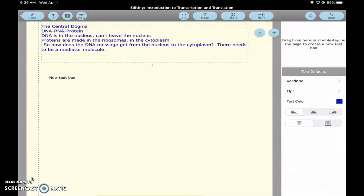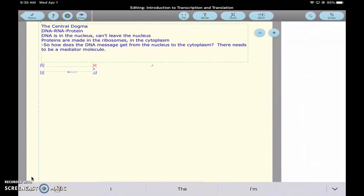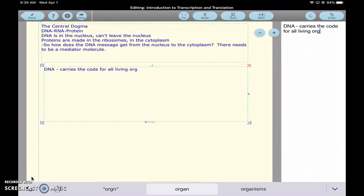There are some things that you guys need to know before we get too much further into this. There's some vocab that you guys need to know. We know what DNA is: carries the code for all living organisms. RNA is something called ribonucleic acid, and there are three types: